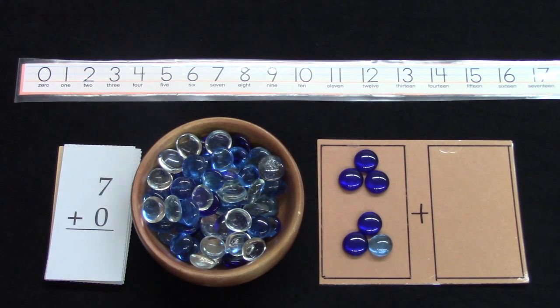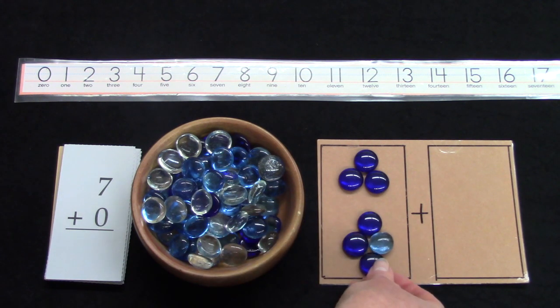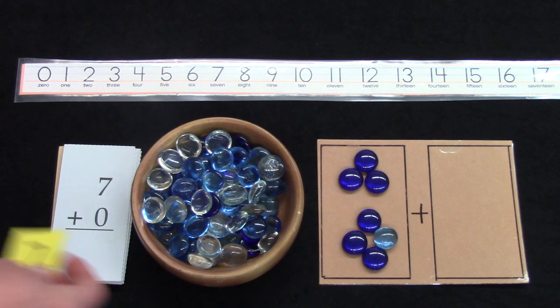What if we had seven, seven plus zero? Seven plus zero is seven.